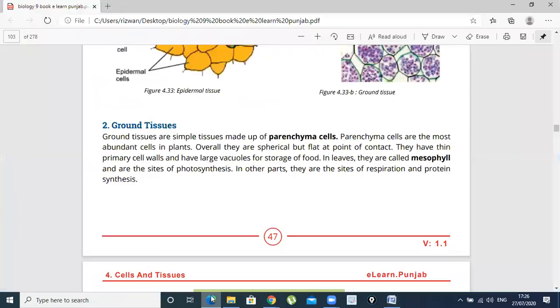We will discuss Ground Tissues. Ground Tissues are simple tissue. What are they called? Ground Tissues are called Parenchyma Cells or Mesophyll Cells. If you ask someone about Ground Tissues, they are Parenchyma Cells or Mesophyll Cells. Mesophyll Cells is a name we have studied in Leaves.